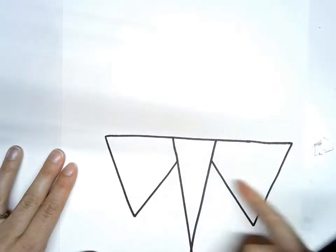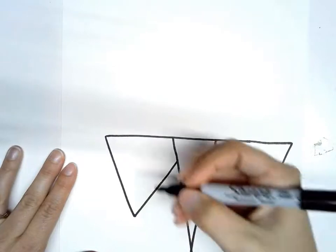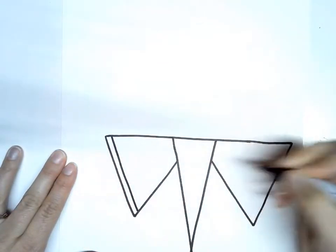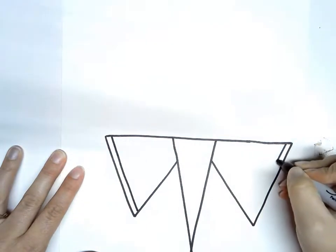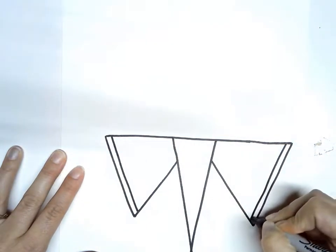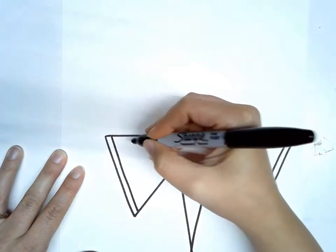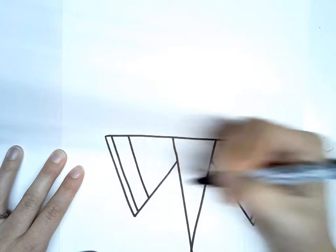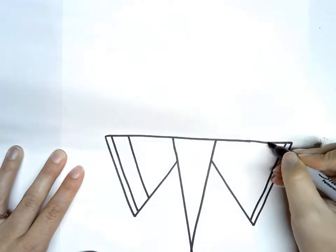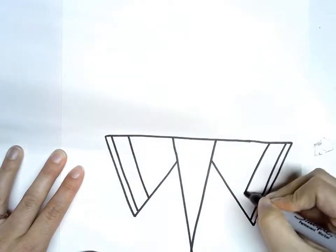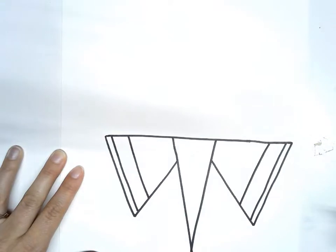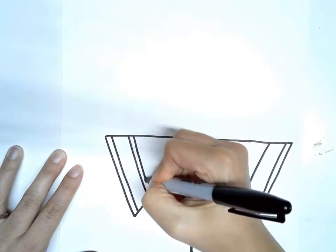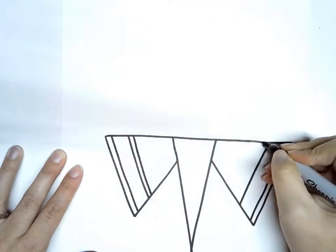And then inside of each of these I'm going to make a stripe. And a stripe on this one. And then I'm going to make another line that's a little further over. And the same thing on the other side. And one more on each side.